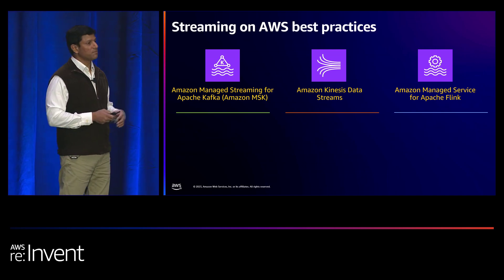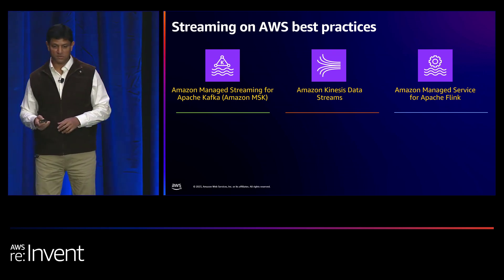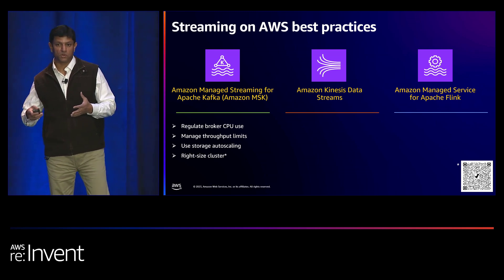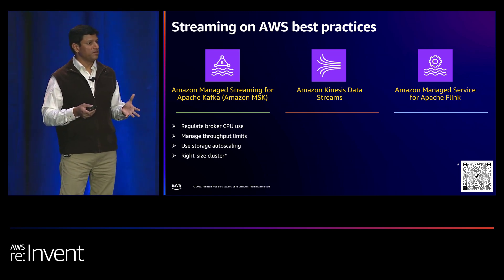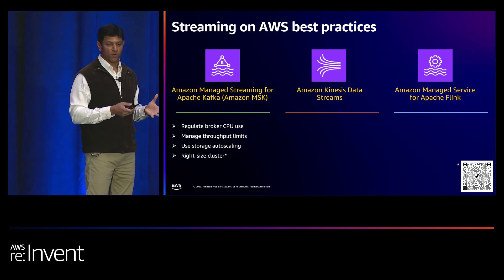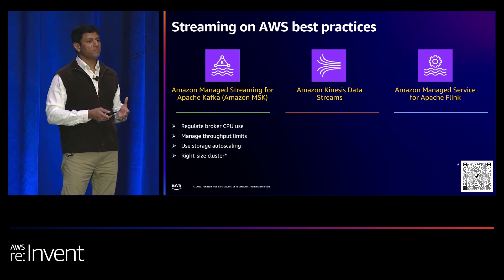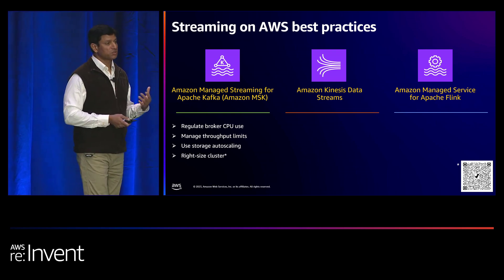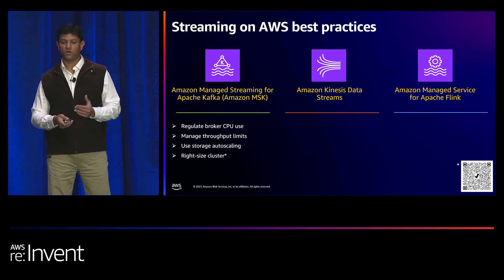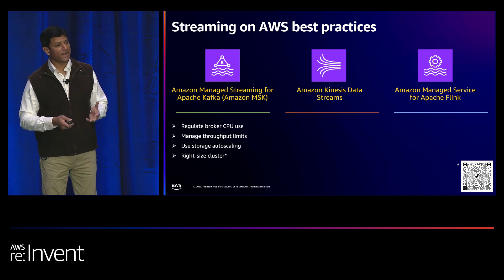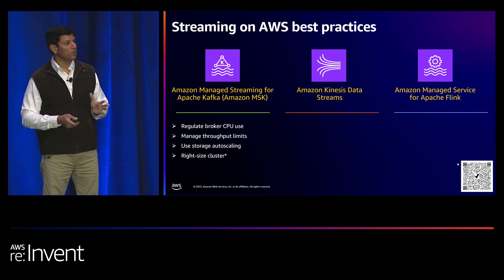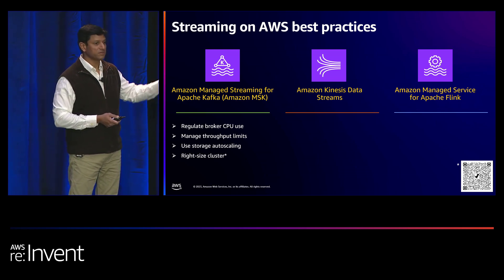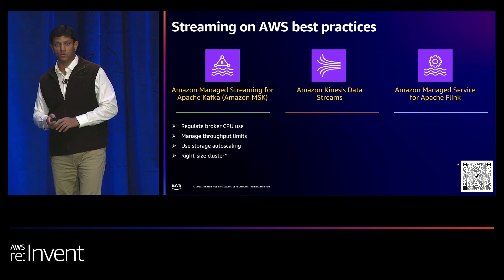Let's see how to get the most out of these streaming services, starting with Amazon MSK. When working with a provisioned MSK cluster, give your cluster enough headroom to tolerate operational events such as broker failures — maintain a 40% CPU availability baseline. To mitigate throttling and downtime, consider defining an 80% throughput threshold. For storage, plan ahead and use the storage auto-scaling feature for dynamic growth. For right-sizing, calculate the right number of brokers and partitions to meet your throughput, availability, and latency needs. QR codes for this documentation will be repeated at the end.